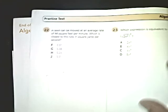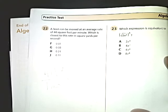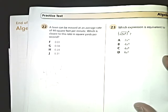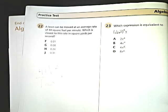The first one we're going to look at is number 22. A lawn can be mowed at an average rate of 44 square feet per minute. What is the closest to this rate in square yards per second?